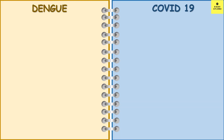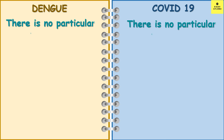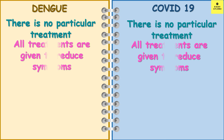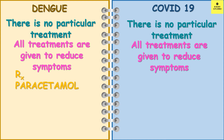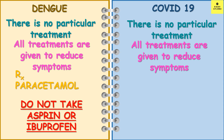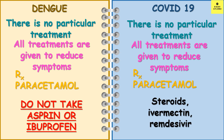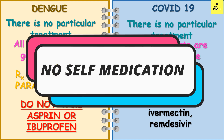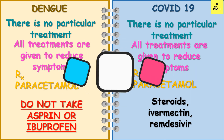There are no particular treatments for dengue or COVID-19; all treatments are given to reduce the symptoms. In case of dengue, paracetamol is given to control fever and pain. Please do not use aspirin or ibuprofen. Drink plenty of water and stay hydrated with water and drinks with added electrolytes. In case of COVID-19, research is ongoing. Paracetamol is given to control fever and pain. Depending on your condition, other drugs like steroids, ivermectin, or remdesivir can be given, but it is for the doctor to decide. Please do not self-medicate.